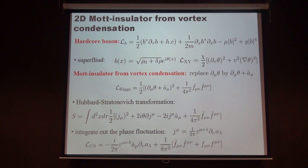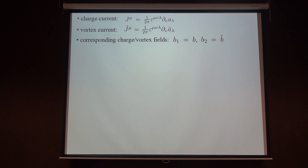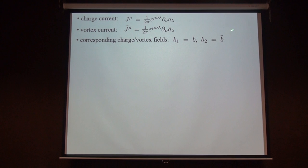In this theory we can define the charge current, which is just the dual of the field strength of the A gauge field, and we can also define the corresponding vortex current. Because we have two U(1) gauge fields — A-tilde and A — we naturally have both vortex and charge degrees of freedom. We introduce the corresponding fields: B1, which carries the gauge charge of A (coupled to A), and B2, the vortex field coupled to A-tilde.